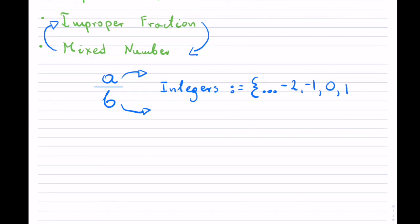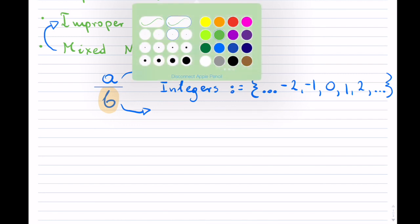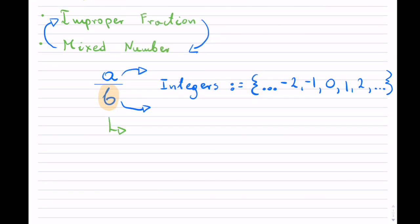This is the set of integers, so they go on forever in both directions. Now, the only thing to remember is that the denominator B is not allowed to be zero, but it can be any other integer.